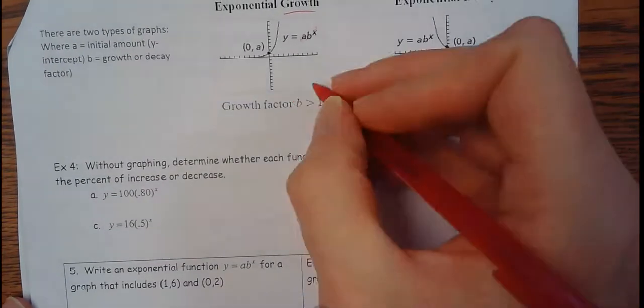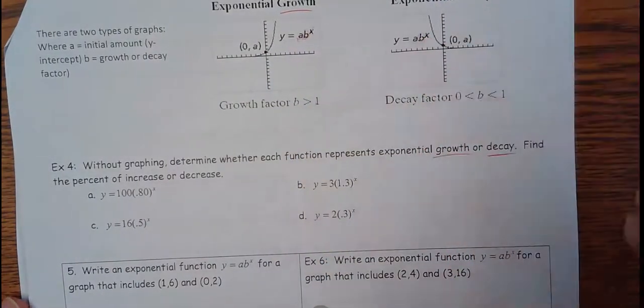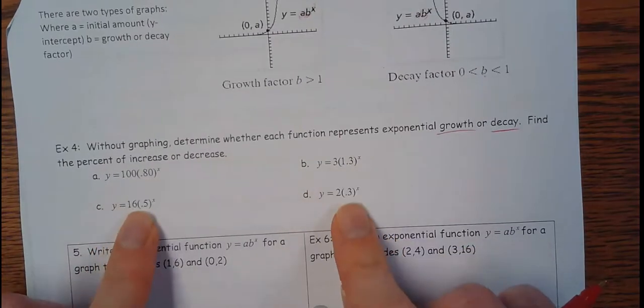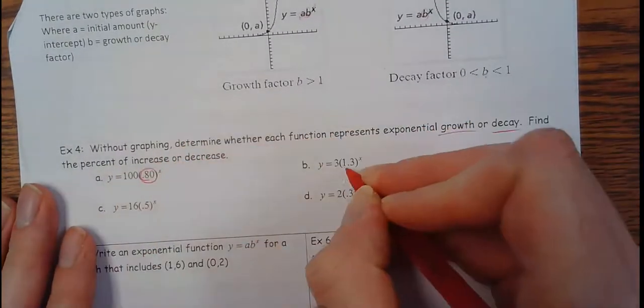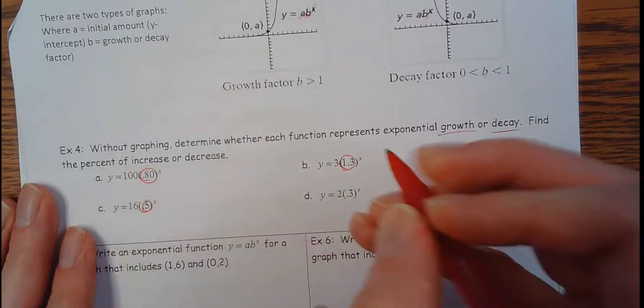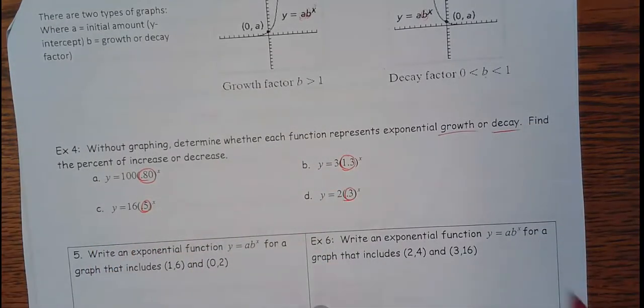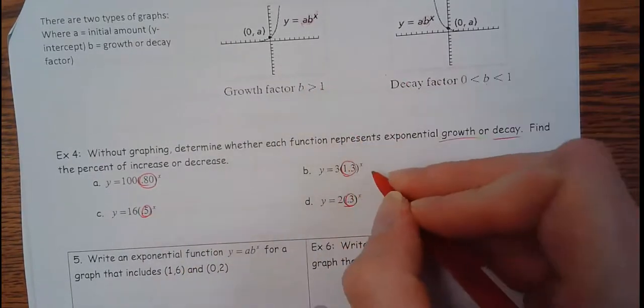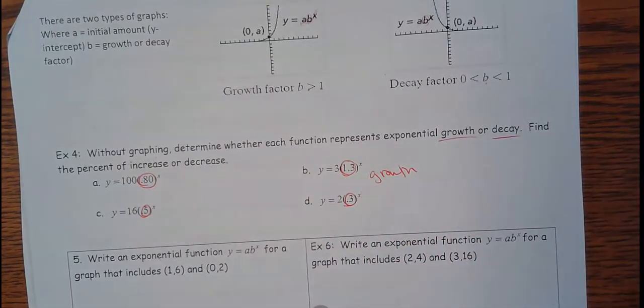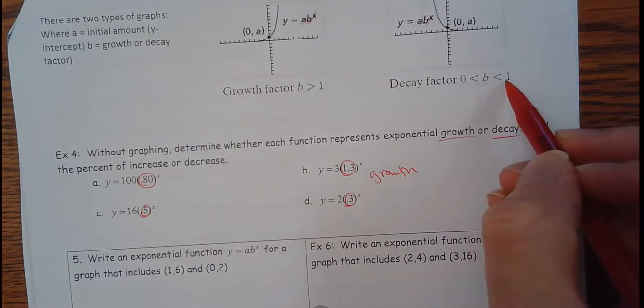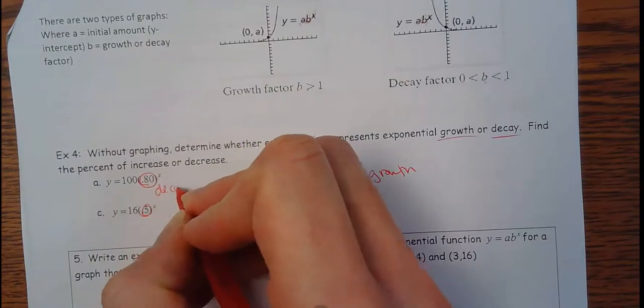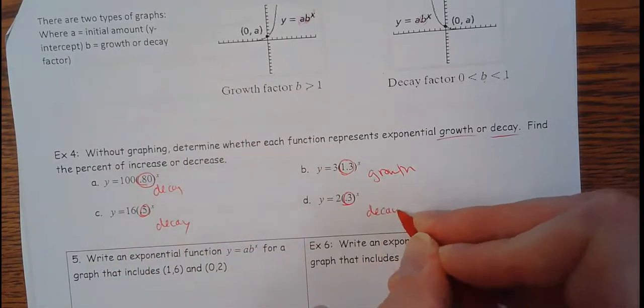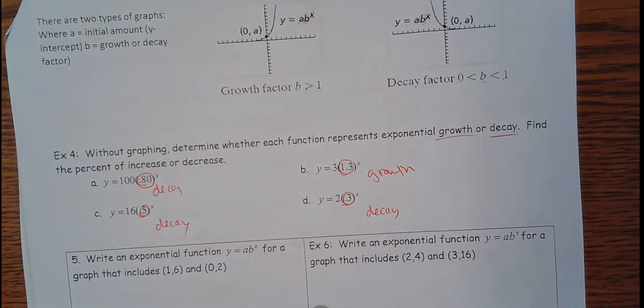In all of these, I want to know what is the base that's being multiplied. Because the b is the growth factor. So on these, these right here are what's going to tell me. So 0.8, 1.3, 0.5, and 0.3. If they're greater than 1, it's growth. So this is growth. If it's between 0 and 1, 0.8 is between 0 and 1. That's decay, decay, and decay.